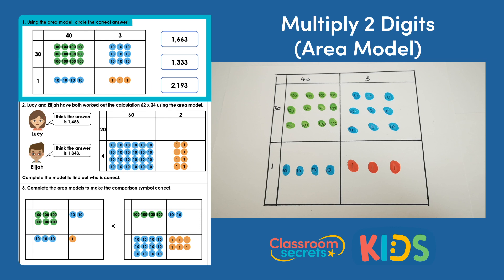Question one says: using the area model, circle the correct answer. In front of us we've got what looks like a complete area model for the calculation 43 times 31. It's always a good idea to check these models to make sure we don't need to add anything extra, because the question says 'using the area model' — it doesn't say whether or not it's complete.